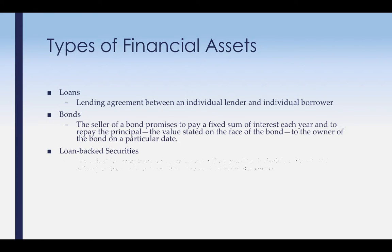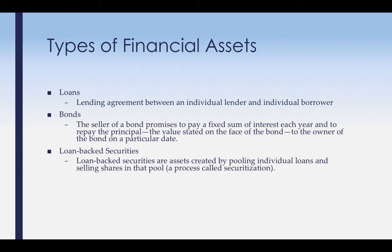Loan-backed securities involve taking a variety of loans, putting them together, and selling shares. This was actually one of the things that led to the financial crisis. Banks took mortgage loans, car loans, home loans, and student loans, put them all together, and sold chunks of them. When the home loans went bad, the entire package went bad. This is called securitization — and it's kind of ironic because it wasn't really that secure at all.